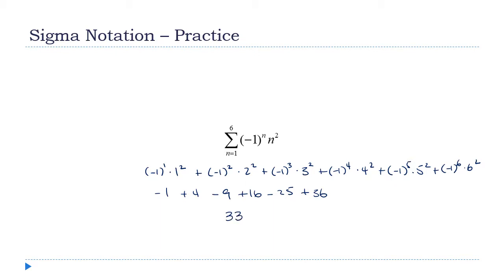Notice what effect the (-1)^n had. If you want a series where the terms alternate positive versus negative, that's how we do it — use (-1)^n. That starts the series at a negative. If you want the first term to be positive, use (-1)^(n+1) instead — that starts at (-1)² which is positive, giving alternating positive then negative.